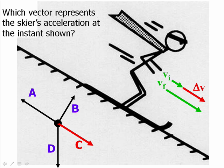The acceleration vector is always in the same direction as the change in velocity, so C must be the right direction. For those of you who chose direction D, what were you thinking?